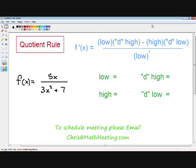In this video, I'm going to teach you how to take the derivative of a function using the quotient rule. The first thing I want to let you know is, when do you need to use the quotient rule? As you can see in the example, f of x equals 5x divided by 3x cubed plus 7.